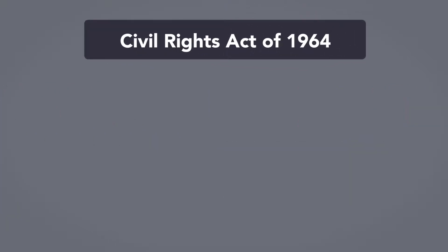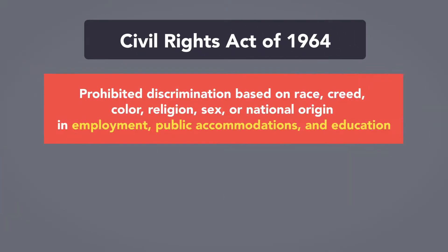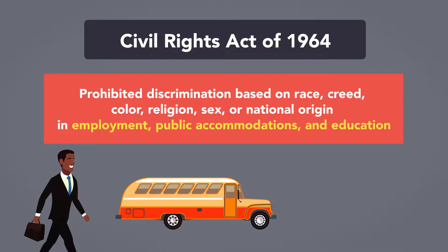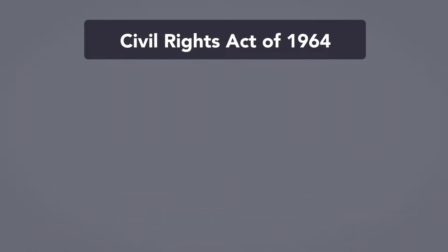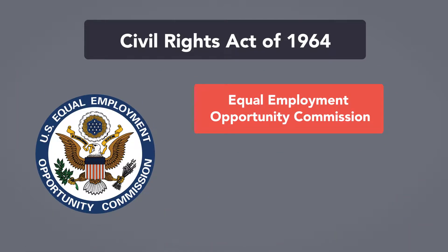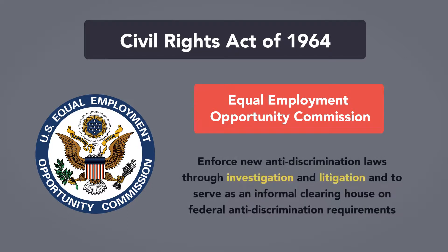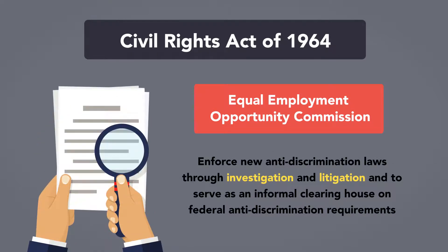Next, the landmark Civil Rights Act of 1964 prohibited discrimination based on race, creed, color, religion, sex, or national origin in employment, public accommodations, and education. This law also created the Equal Employment Opportunity Commission to enforce these new anti-discrimination laws through investigation and litigation, and to serve as an informal clearinghouse on federal anti-discrimination requirements.